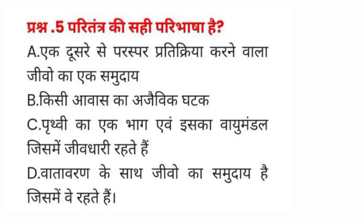Question number five: पारितंत्र की सही परिभाषा है — A) एक दूसरे से परस्पर प्रतिक्रिया करने वाला जीवों का एक समुदाय, B) किसी आवास का जैविक घटक, C) पृथ्वी का एक भाग जो इसका वायु मंडल जिसमें जीवधारी रहते हैं, D) वातावरण के साथ जीवों का समुदाय जिसमें वे रहते हैं। इसका सही जवाब D होगा।